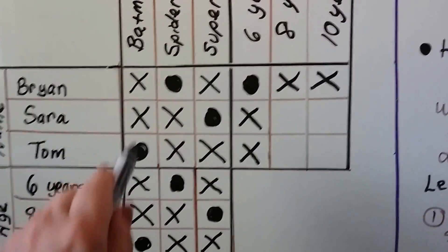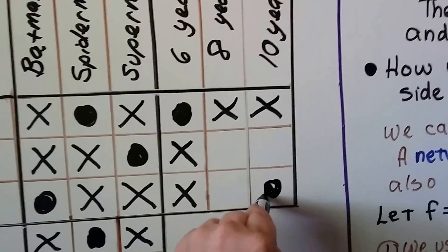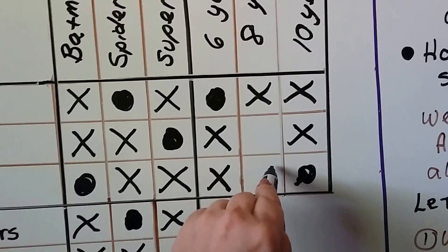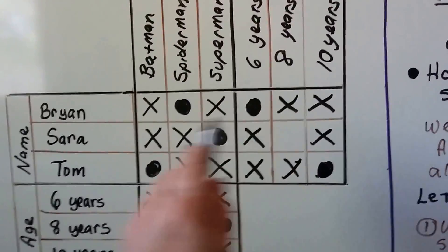And we can complete the grid here. Tom is Batman, so Tom must be the ten-year-old, which means Sarah is not the ten-year-old and Tom is not the eight-year-old.